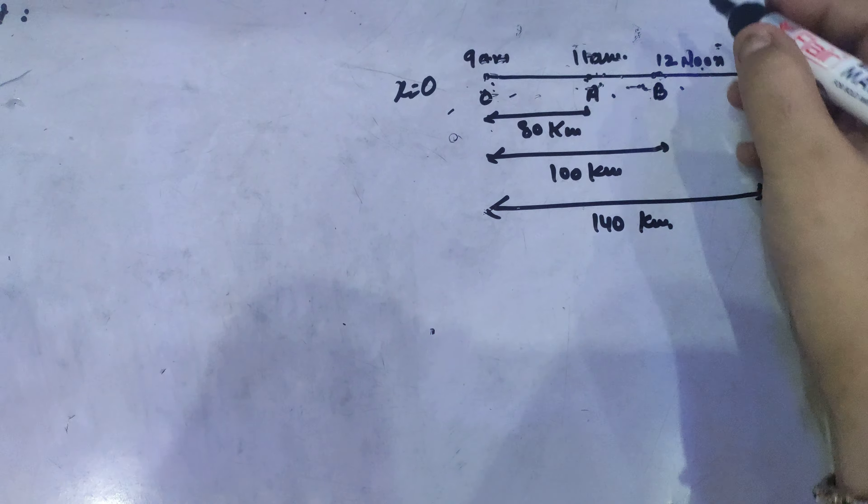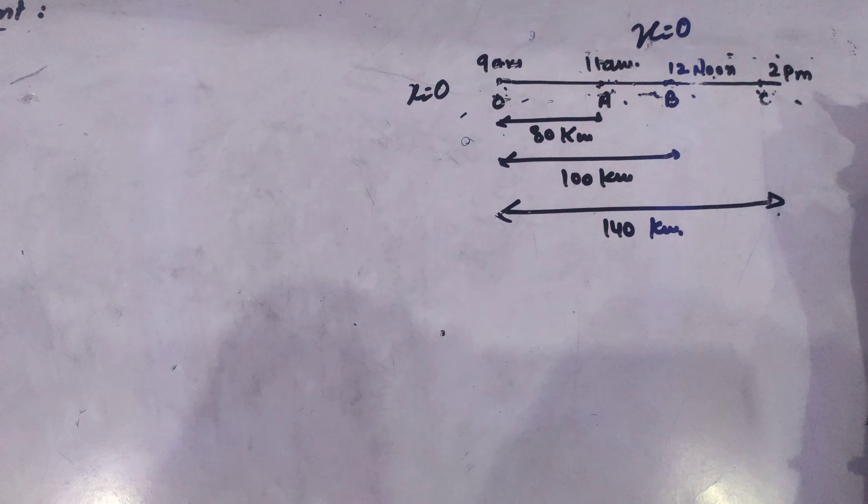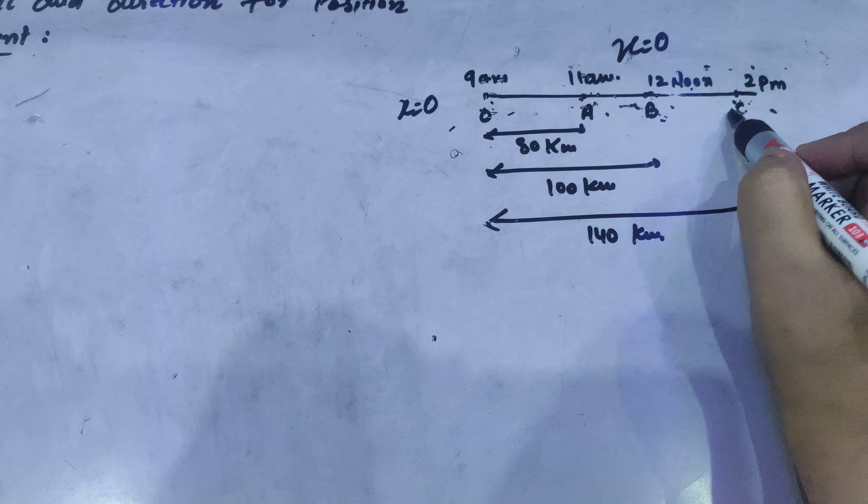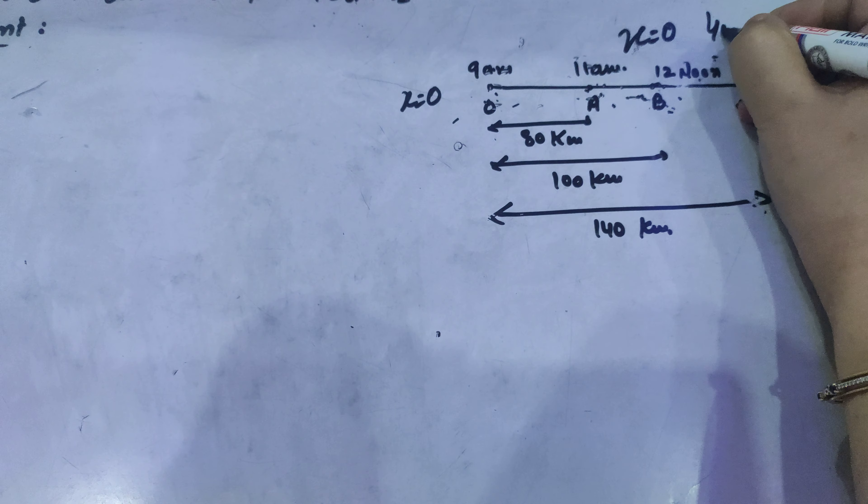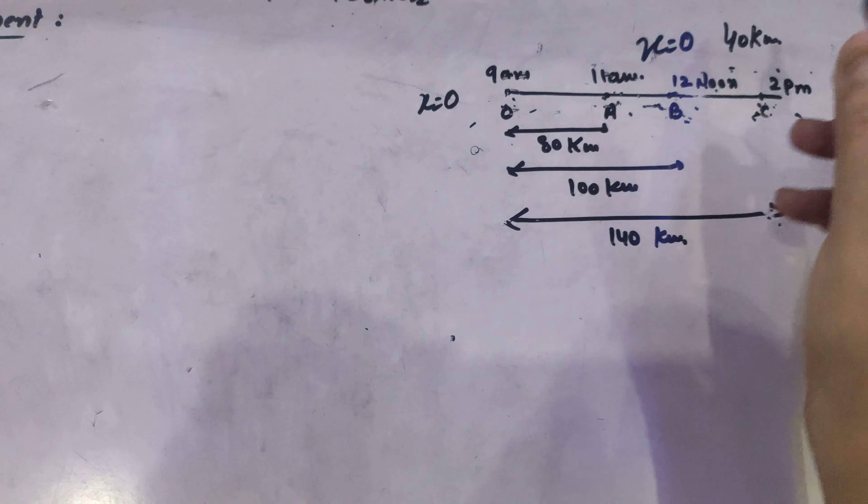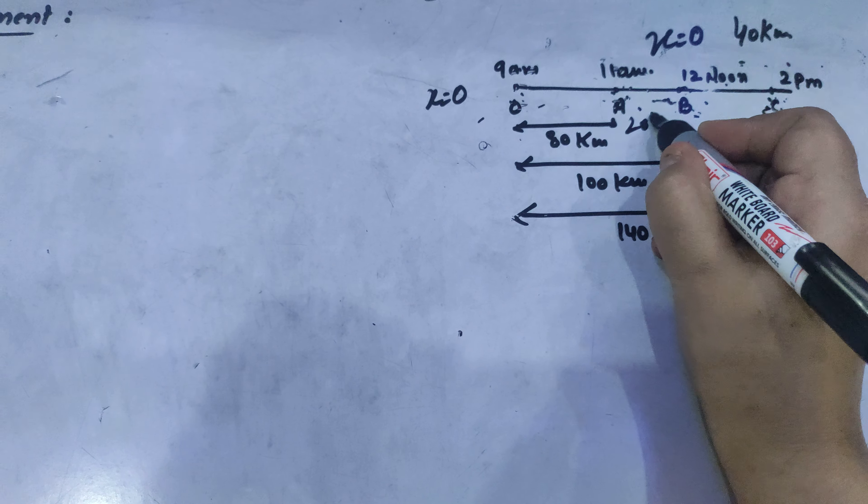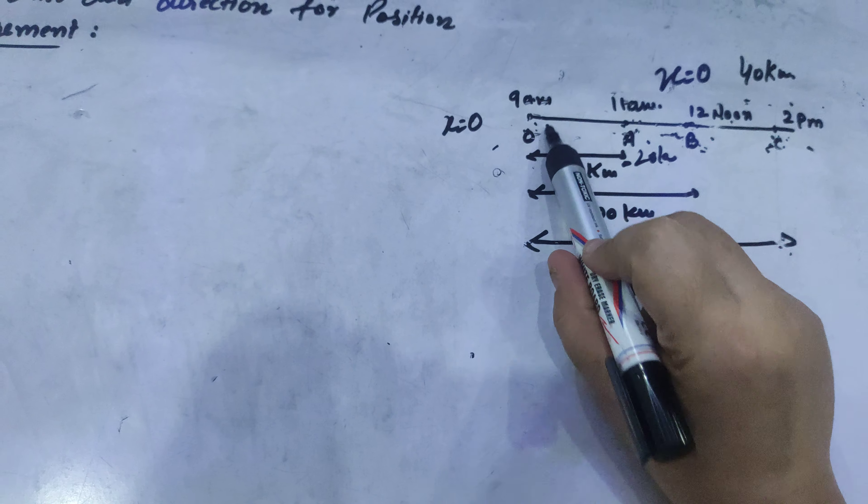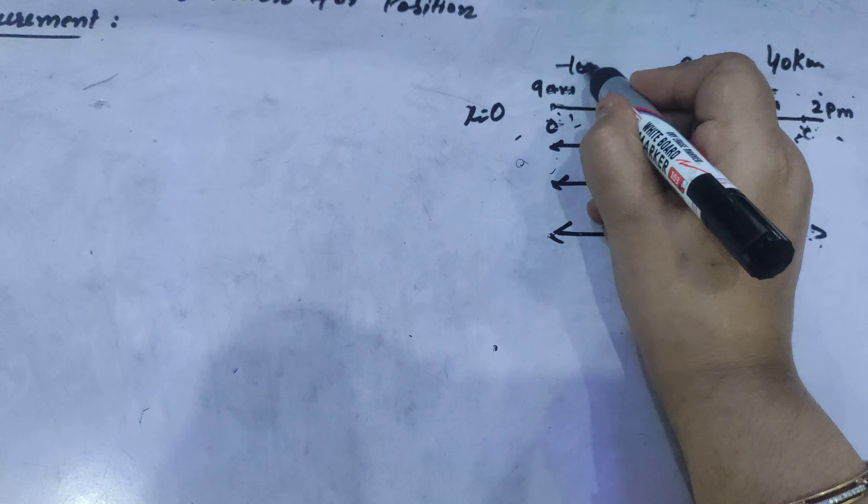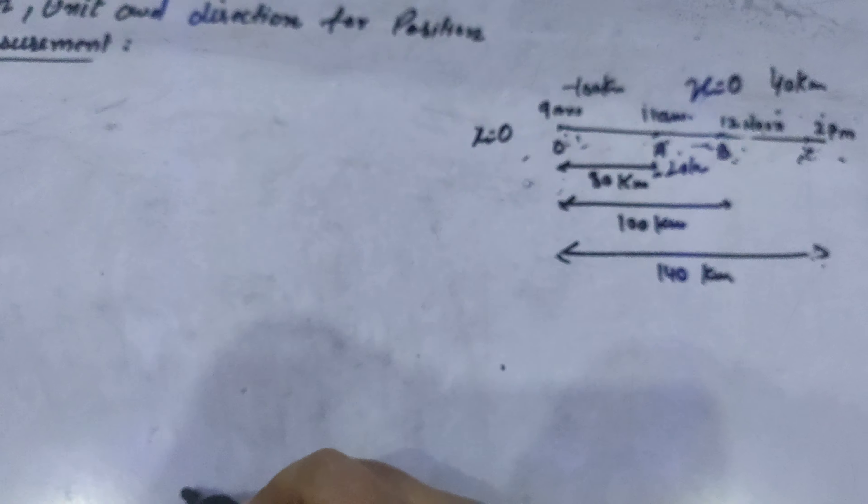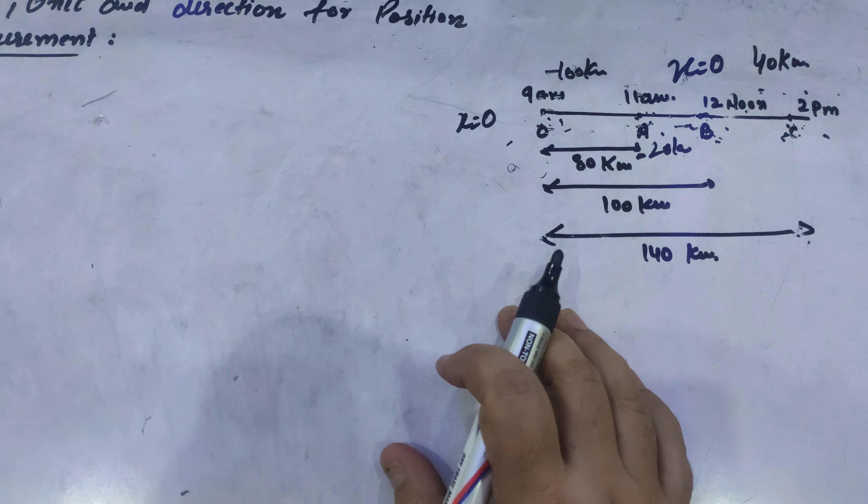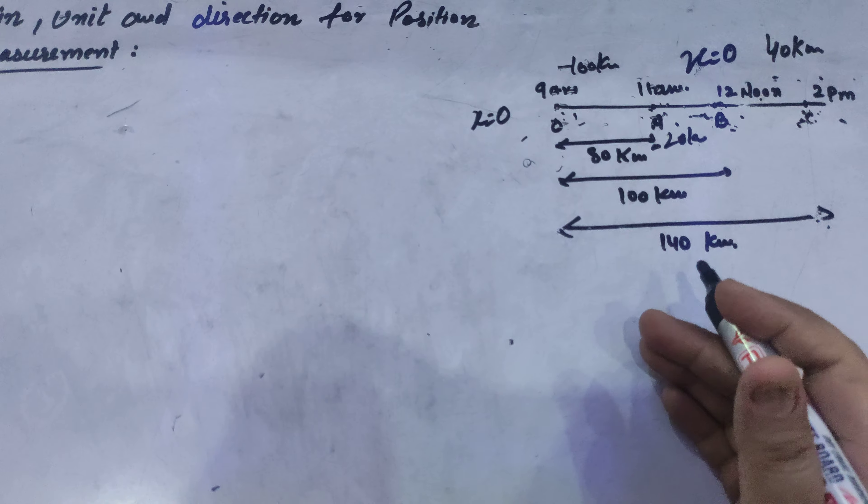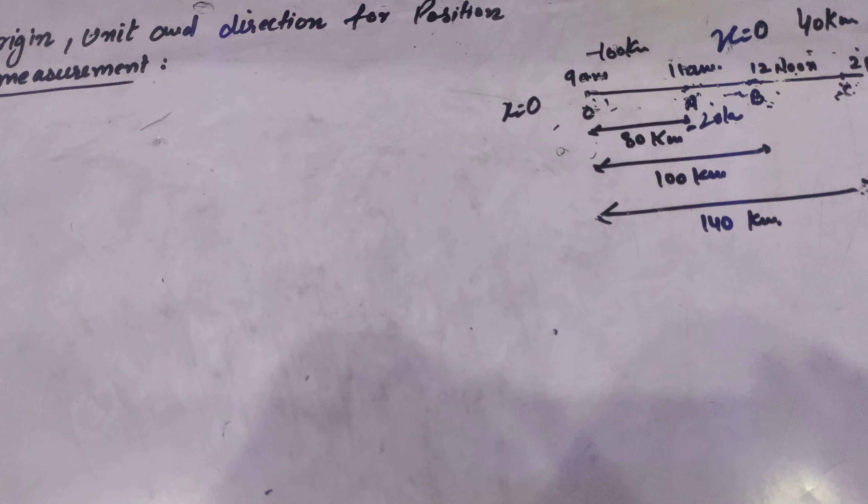But if we shift the origin to this position x is equal to 0, it means now the difference between B and C will be 40 km while between A and B it is 20 km but with negative sign and between B and O it is minus 100 km. So again we can discuss here that on shifting the origin, what changes can take place.